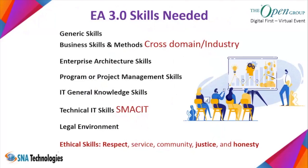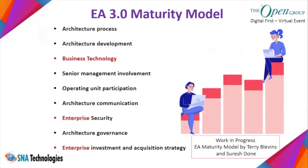For EA 3.0, the skills needed have expanded further. Business skills should now be cross-domain and cross-industry, because strategic transformation crosses organizational boundaries. We need SMACKIT-related skills. Moreover, in this post-COVID era, we need to embed ethical skills within organizations — values like justice, service, and community — for both employees of organizations and citizens of countries.